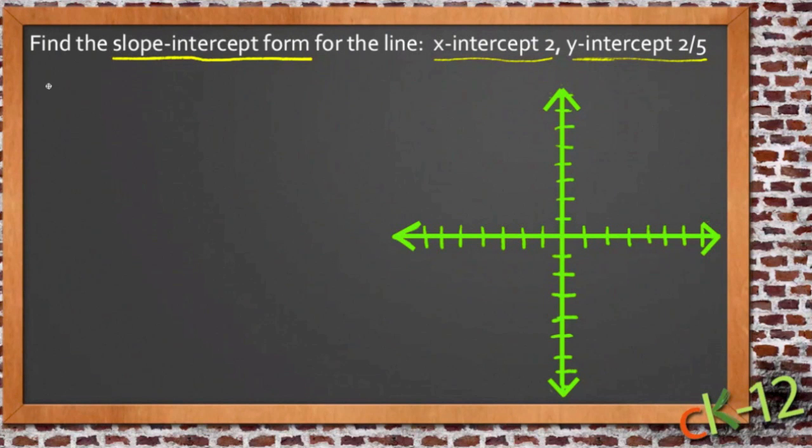First we need slope intercept form for a line is y equals mx plus b, where x and y are values that we substitute in, m is the slope of the line, and b is the y-intercept.